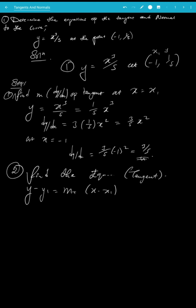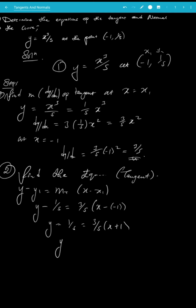We know x1 and y1. So: y - (1/5) = (3/5)(x - (-1)), which gives y - 1/5 = (3/5)(x + 1). Expanding: y - 1/5 = (3/5)x + 3/5. Moving 1/5 across the equals sign gives y = (3/5)x + 3/5 + 1/5.